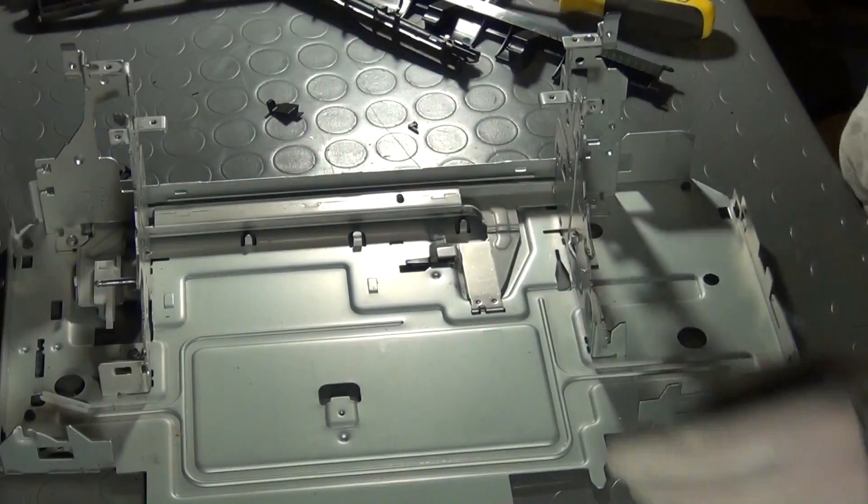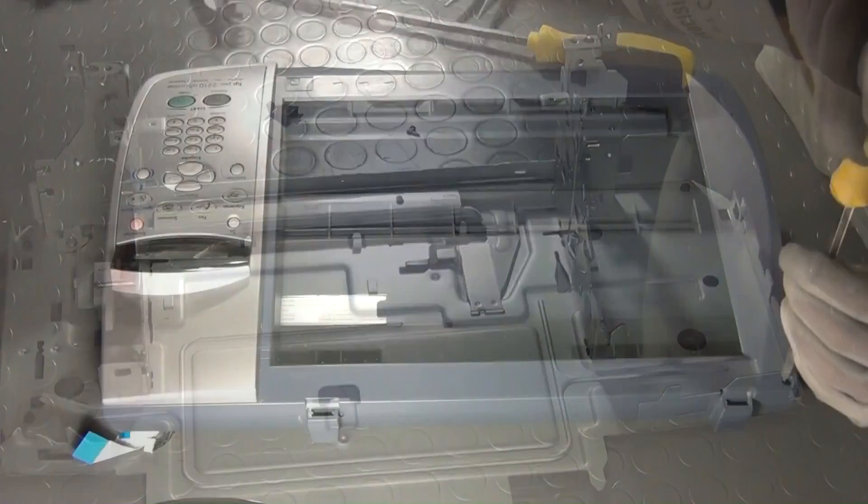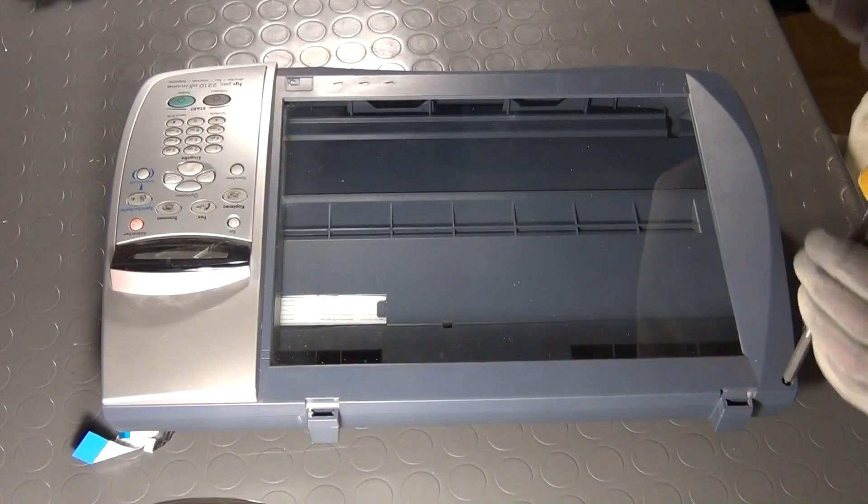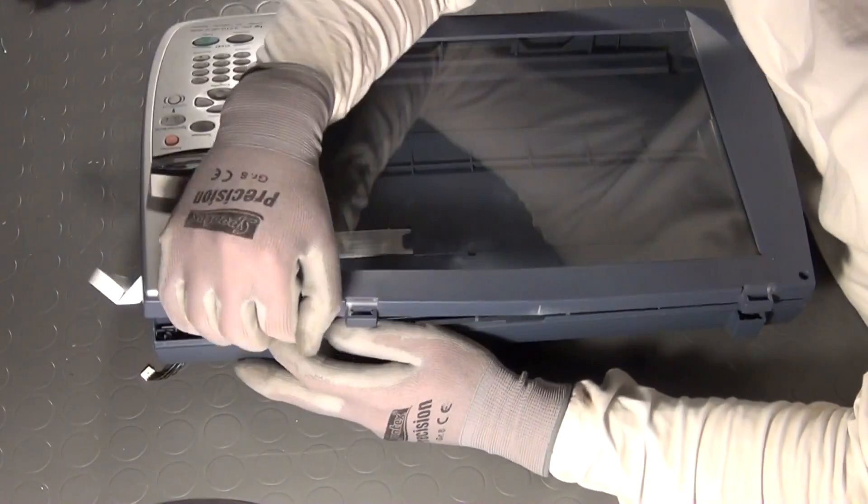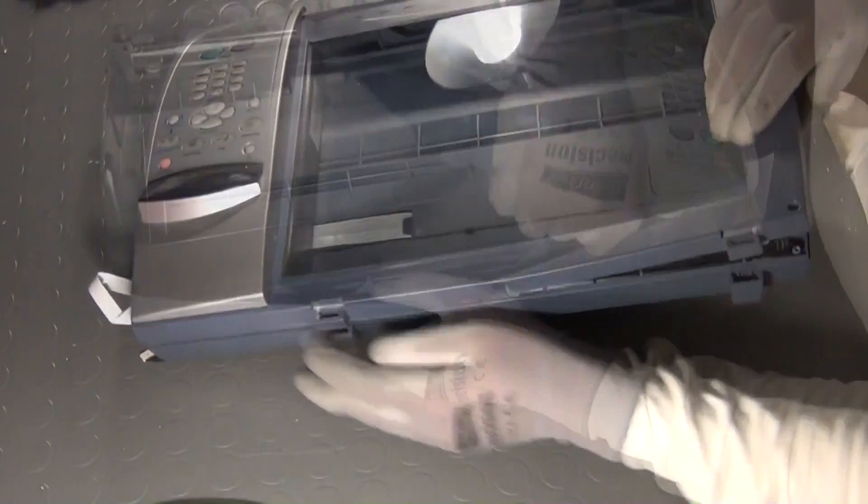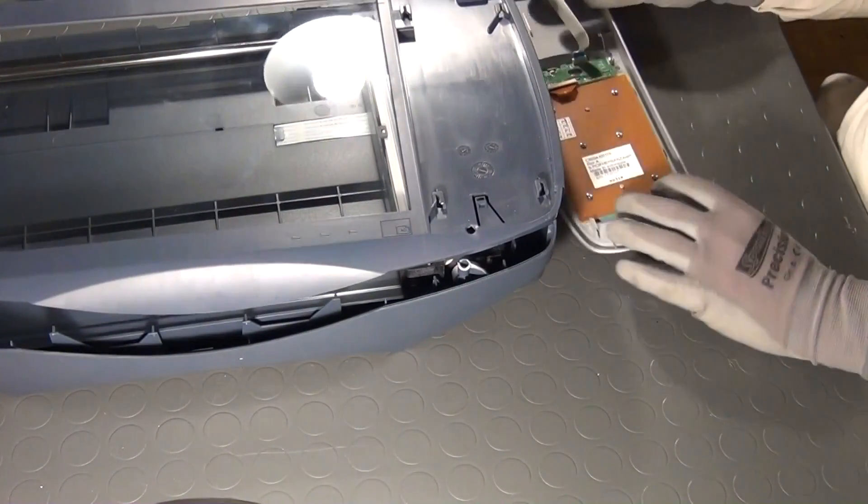The printer unit is now stripped down to its bare skeleton, but the scanner unit still remains to be disassembled. With this model, just one single screw has to be removed. Then, more than ever, force might be required to get the casing open. Here, the panel holding LCD and buttons just pops off.